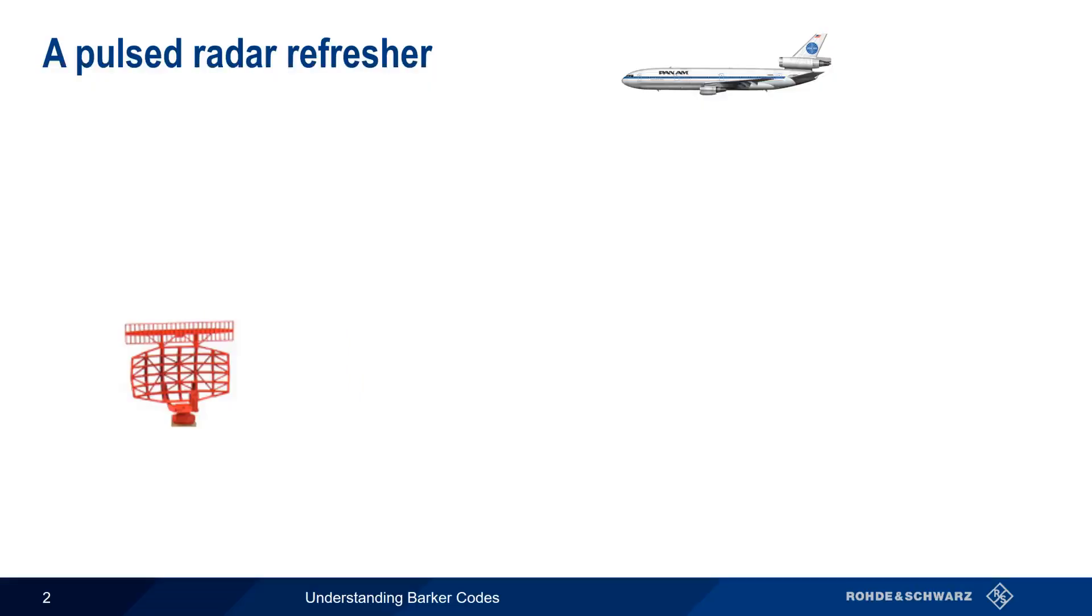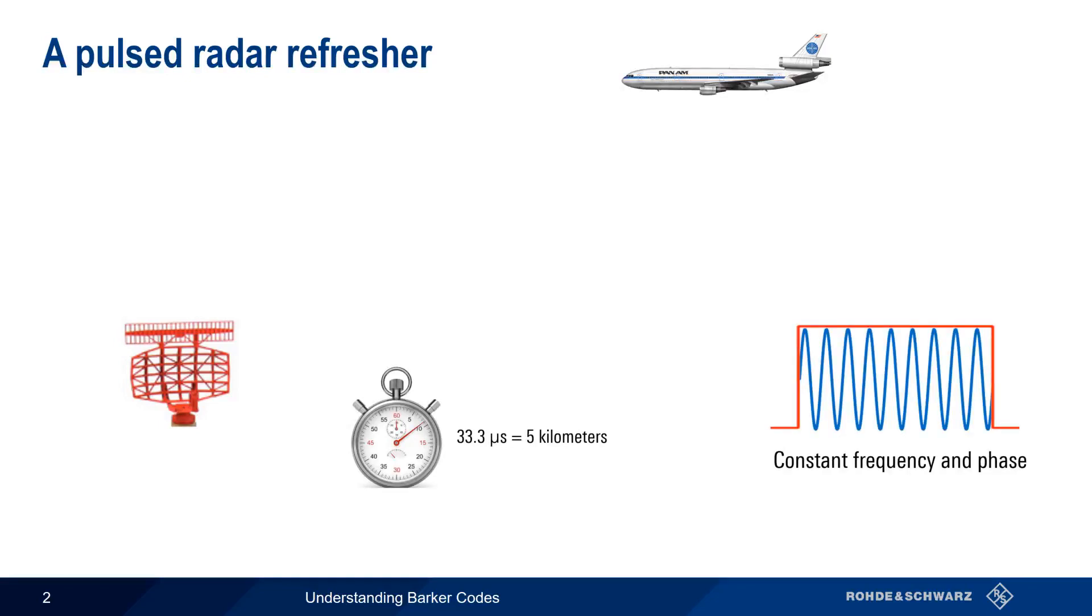Let's start with a brief refresher on pulsed radar. At the most basic level, a pulsed radar system detects objects by transmitting short bursts of RF energy, or pulses, and measuring the time it takes those pulses to return from the target. In very simple radar systems, the frequency and phase of the transmitted radar pulse remain constant over the duration of the pulse. These are often called unmodulated pulses.